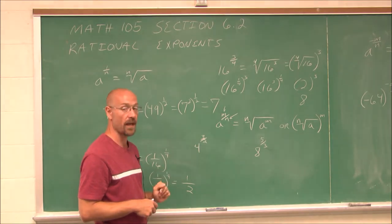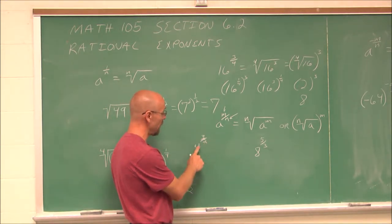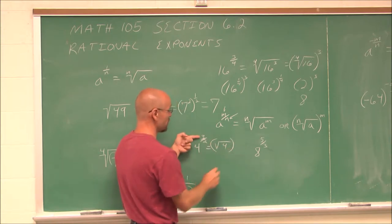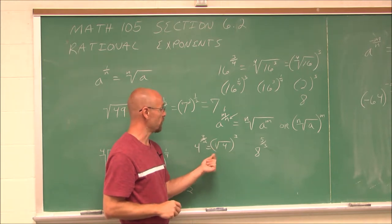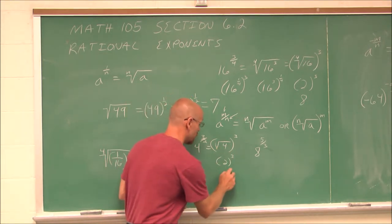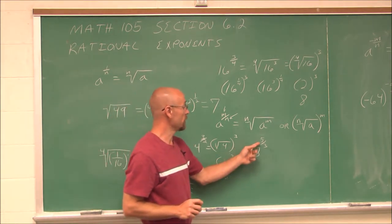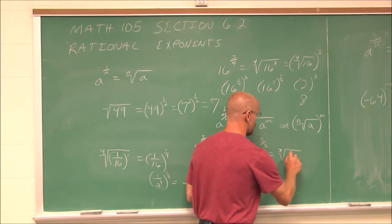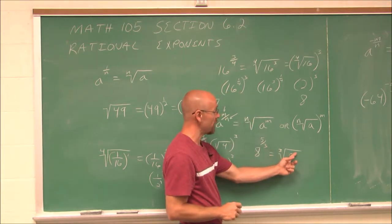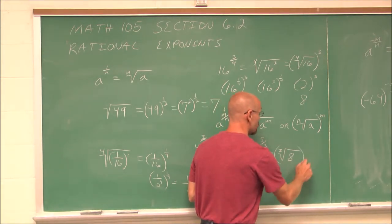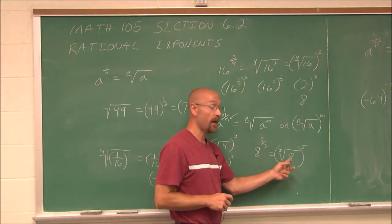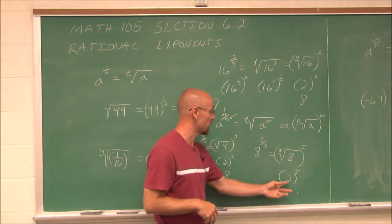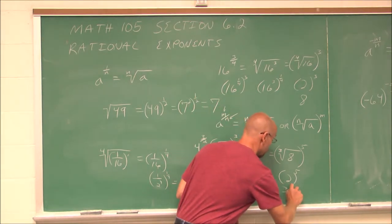Let's use this to simplify a couple of examples. Here I have 4 to the 3/2 power. The index is 2, and I recognize 4 as a perfect square. So I write it as the square root of 4 raised to the power of 3. The square root of 4 is 2, and 2 cubed is 8. For 8 to the 5/3, the index is 3 and 8 is a perfect cube, so the cubed root of 8 is 2, and 2 to the 5th power is 32.